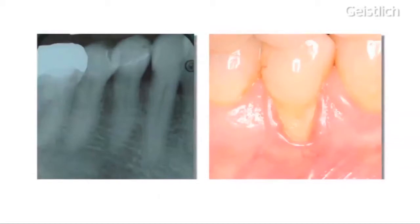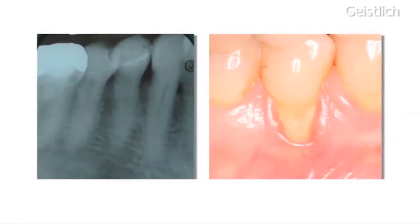This recession of tooth number 44 is presenting a Miller class II type defect. We have a pocket depth of 1 mm in the buccal area and 2 mm interdentally. The defect itself is 4 mm wide and 5 mm deep. Aesthetics is the primary indication for root coverage in this patient.